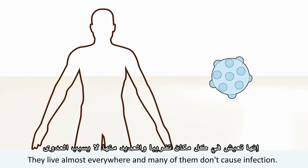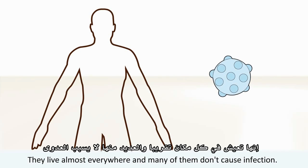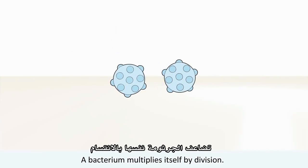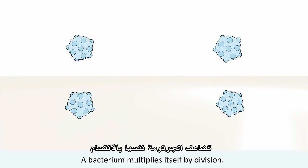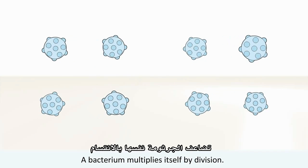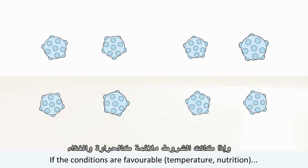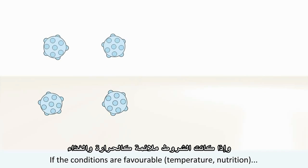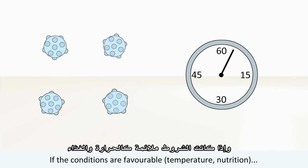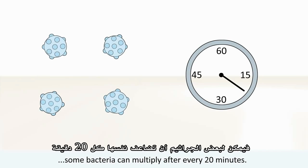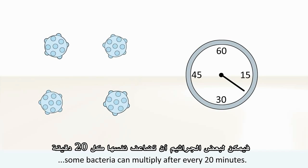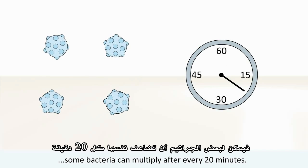A bacterium multiplies itself by division. If the conditions are favorable — temperature, nutrition — some bacteria can multiply after every 20 minutes.